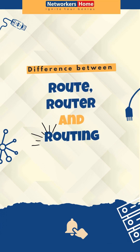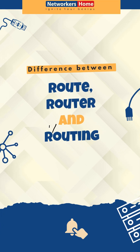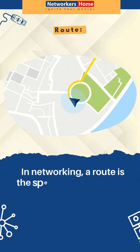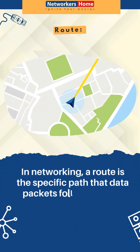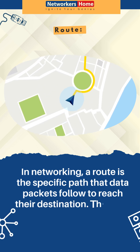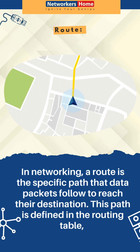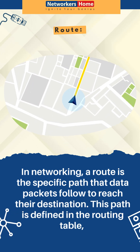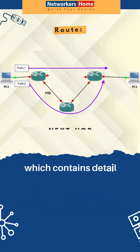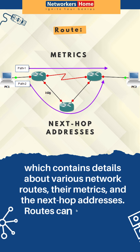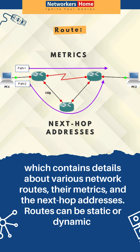Hi guys, today let's talk about the difference between route, router, and routing. A route in networking is the specific path that data packets follow to reach their destination. This path is defined in the routing table, which contains details about various network routes, their metrics, and the next hop addresses.